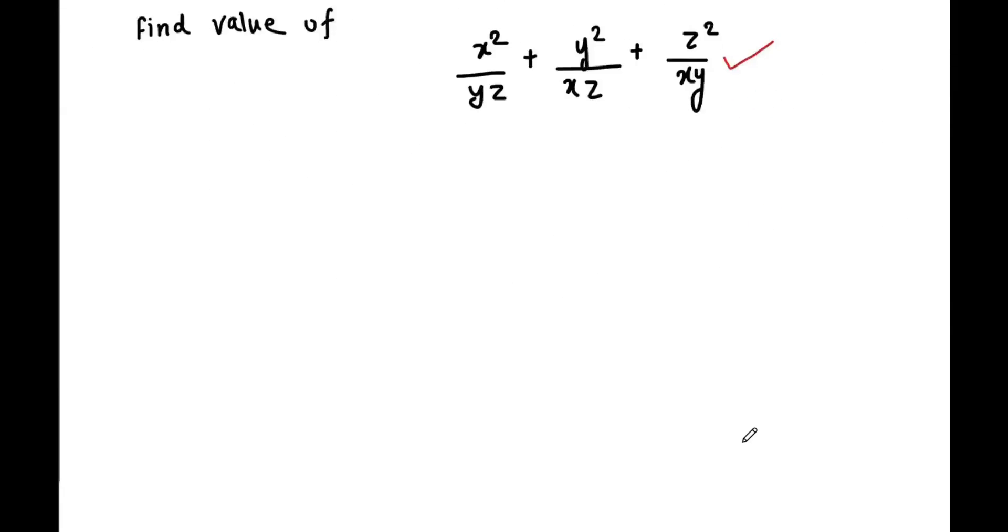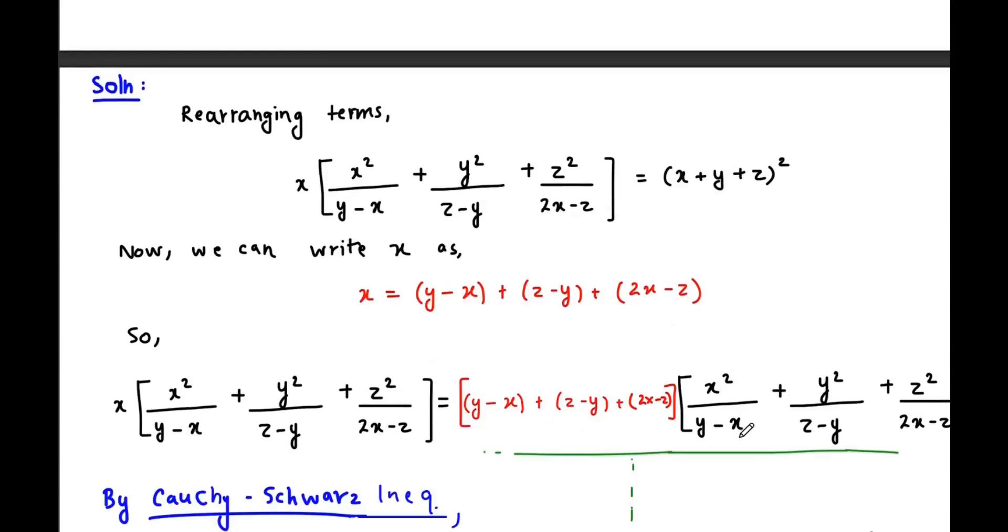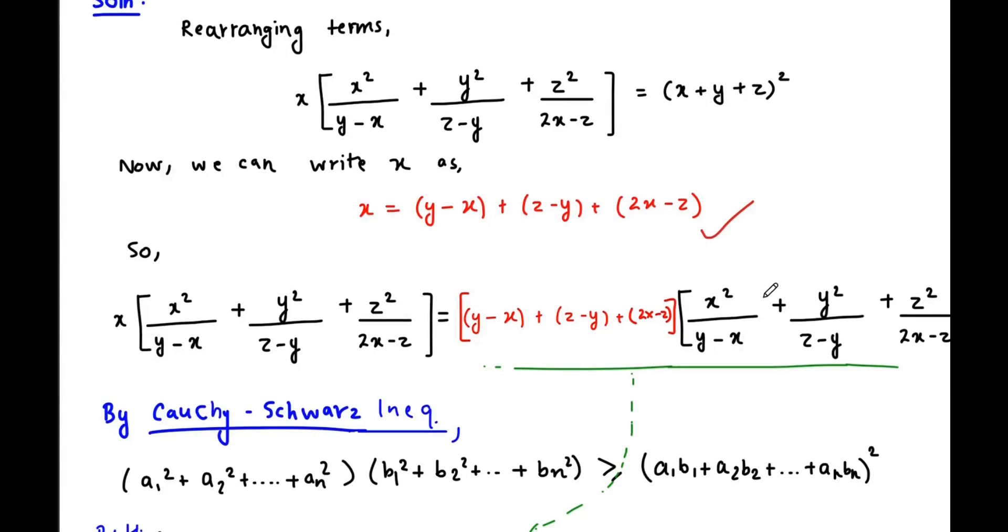Now let's have a look at the solution. After rearranging a few terms, we find that x times x squared upon y minus x plus y squared upon z minus y plus z squared upon 2x minus z equals x plus y plus z whole square. Now x can be rewritten as y minus x plus z minus y plus 2x minus z. Putting the value of x back in the equation, we get this expression right here.